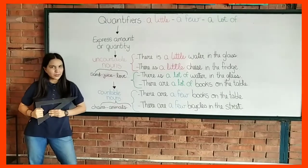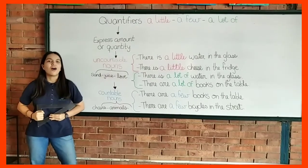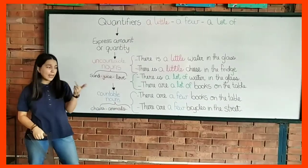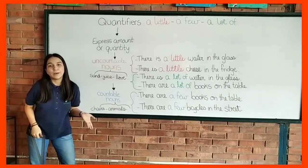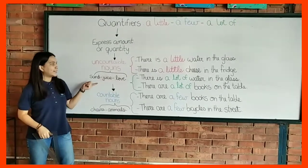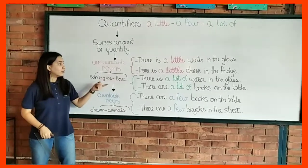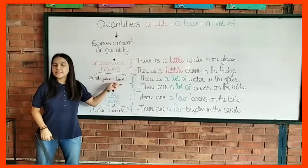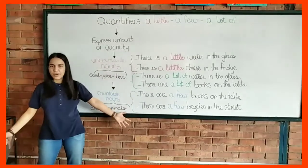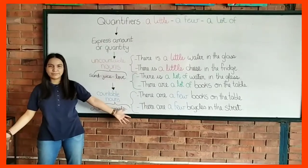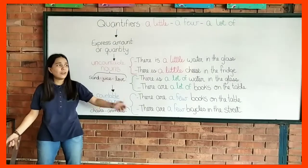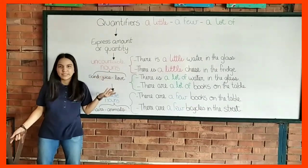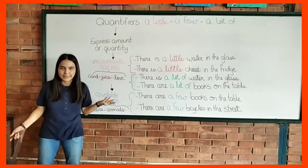The uncountable nouns are the ones that we cannot count. For example, sand, juice, love. We can say, I love you so much. But we cannot say I love you three, I love you four. That doesn't make sense.